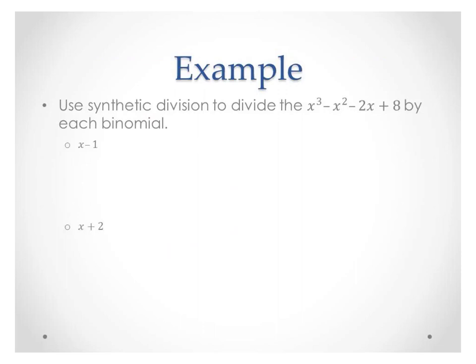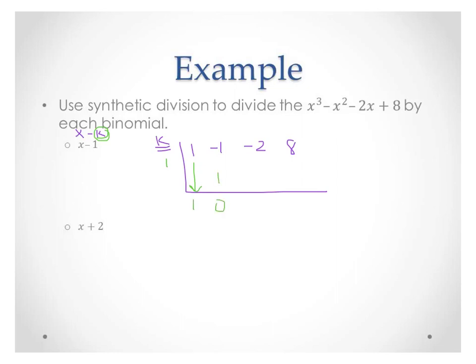We're going to use synthetic division to divide x cubed minus x squared minus 2x plus 8 by each of two binomials. The remainder theorem talks about x minus k, and when we do synthetic division we put in our coefficients: 1, negative 1, negative 2, 8. We put k on the outside. For x minus 1, k is 1. Drop, multiply, add, multiply, add, multiply, add. Our answer — this started as x cubed — is x squared minus 2, with remainder 6 over x minus 1.